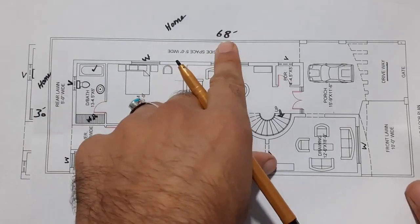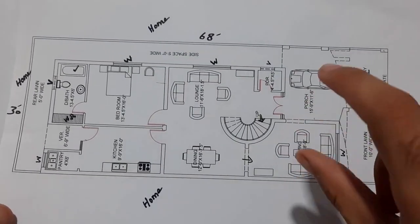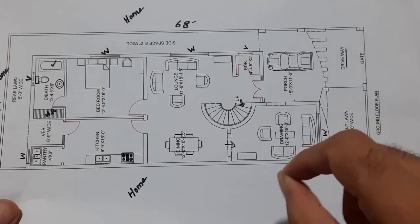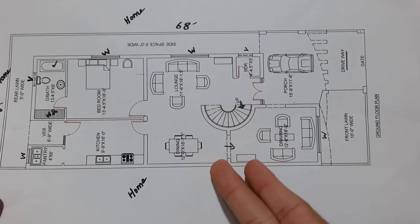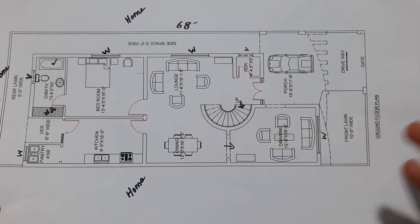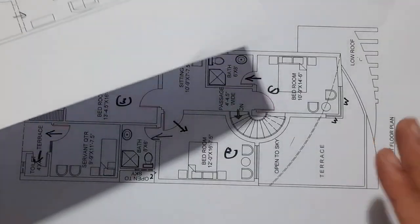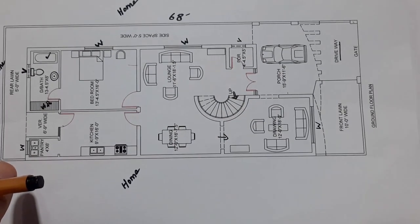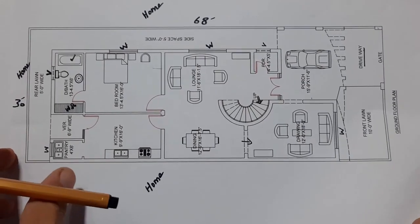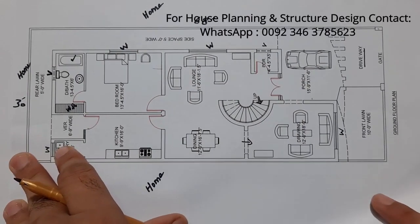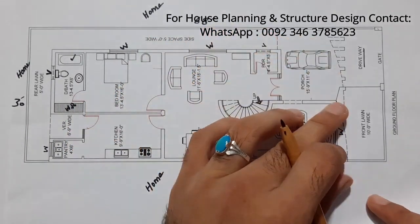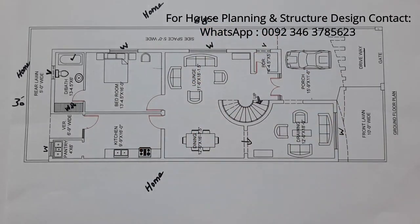In these dimensions of 30 by 68 feet, on the ground floor and first floor combined we have five bedrooms, one kitchen, attached baths, a dining room, drying room, TV lounge, car porch, and terrace. That concludes this short video. If you need house planning, structure design, or 3D animation, contact me on the WhatsApp number shown. Thanks for watching — see you in the next video!